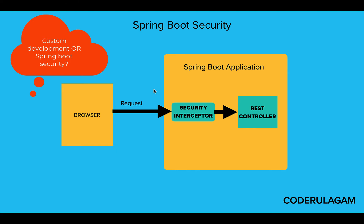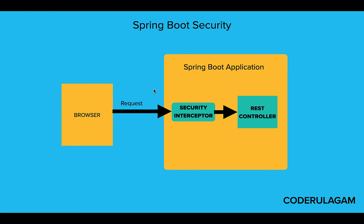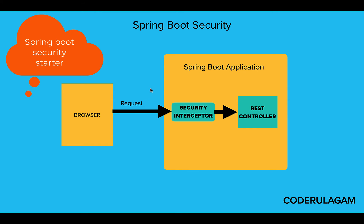Spring Boot has a security starter. If you include it in your project, by default it is included and auto-configured. For example, I can explain it through a flow diagram - you can make a request to localhost 8080.